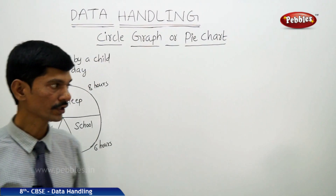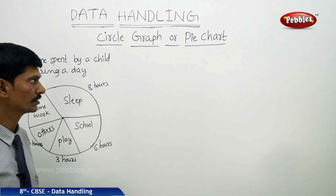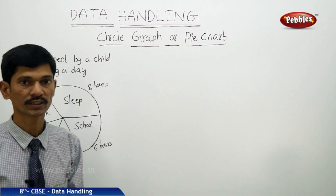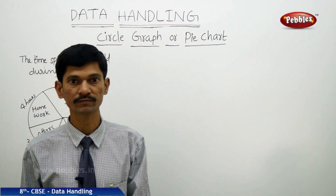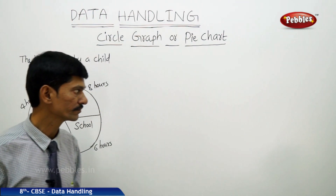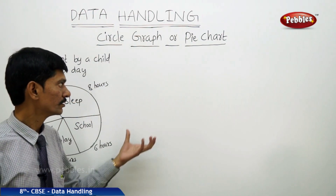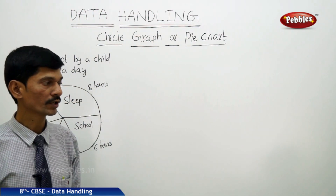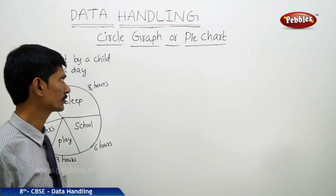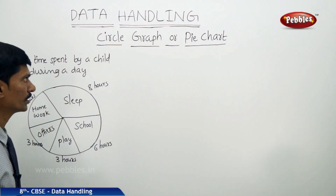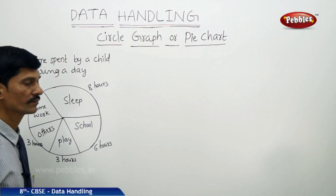So far we have discussed regarding the bar graph, double bar graph, pictograph and histogram. Now let us go to the next topic: circular graph or pie chart.